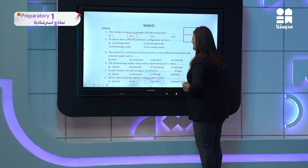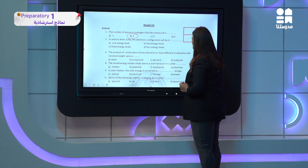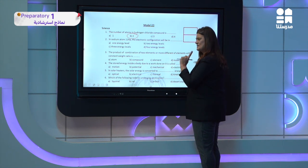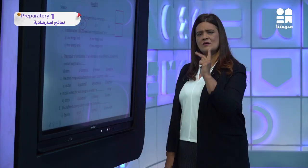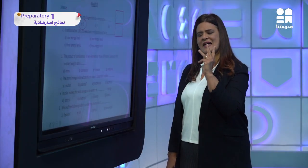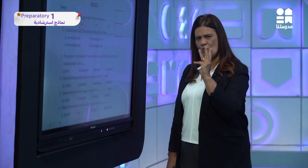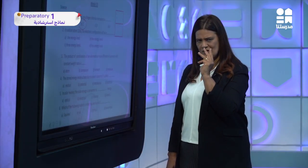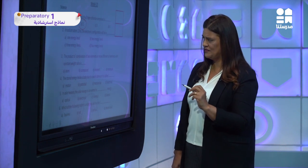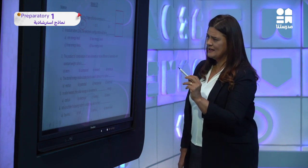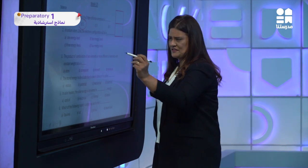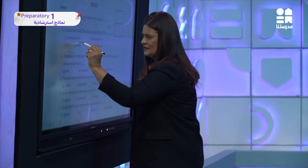In sodium atom — sodium has atomic number 11 — the electronic configuration will be: K has 2 electrons, L has 8 electrons, and M has 1 electron. The sum is 11. So sodium has three energy levels.